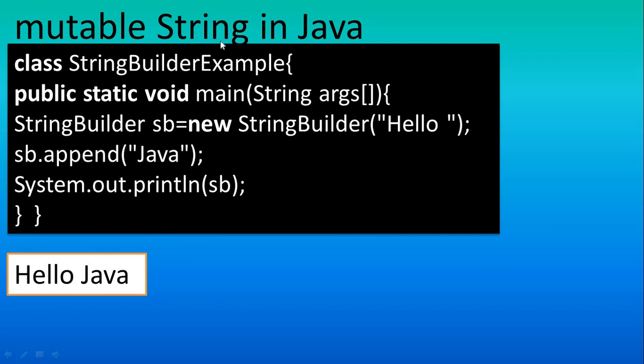I hope you understood what is mutable and what is immutable. Mutable means the original string value can be changed; immutable means it cannot be changed — that is the only difference between these two. In the coming tutorials we will see more about StringBuilder and StringBuffer classes and their functions. Thanks for watching.